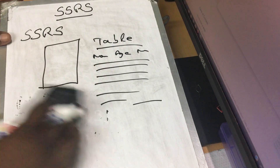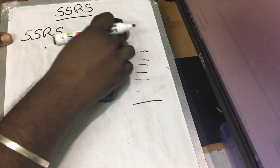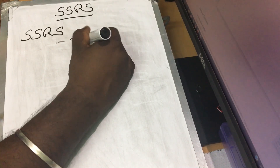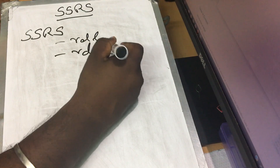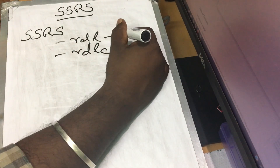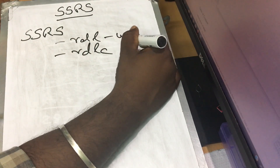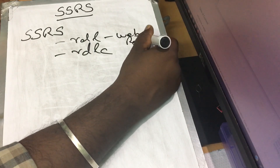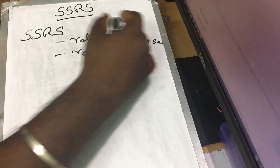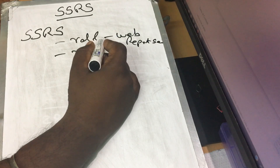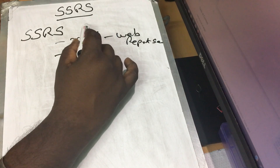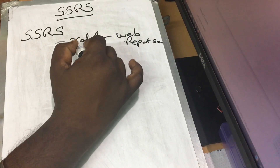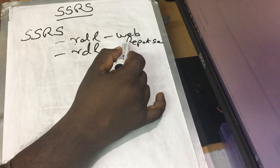You will create two types of files in SSRS: RDL and RDLC. In the RDL file, this is a web application — you host it on the report server and call the report from the server. That is why it gives good performance. The report server connects directly to the SQL server, so the report server has good performance.